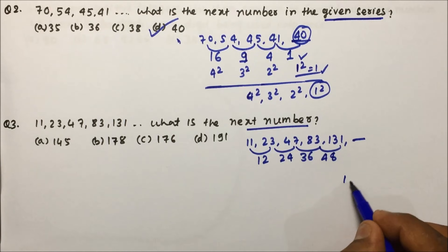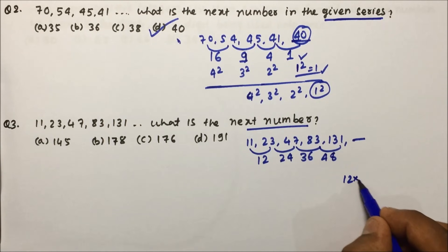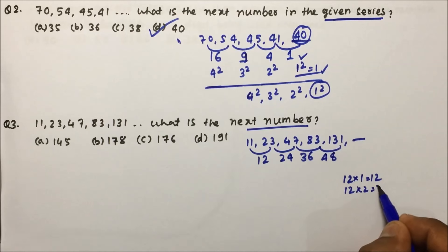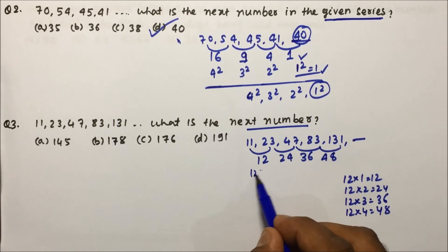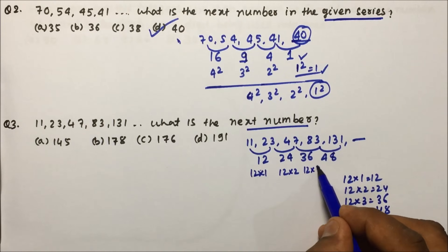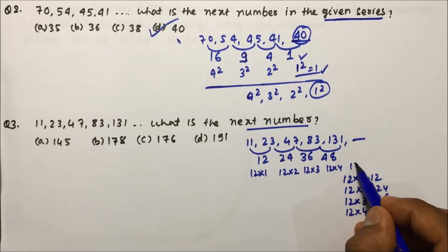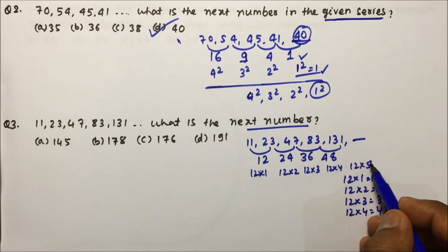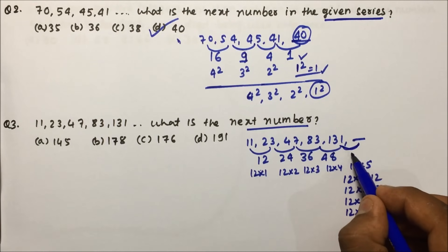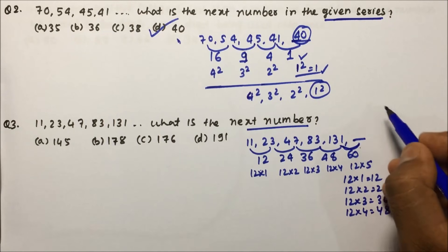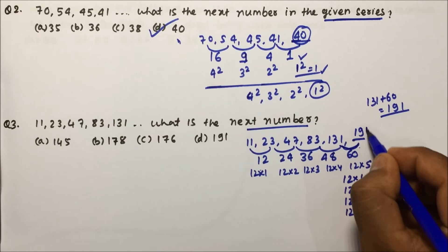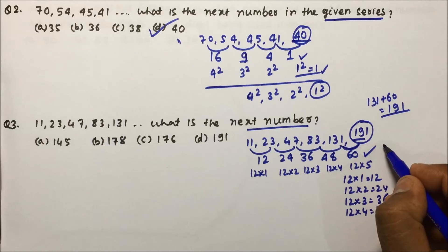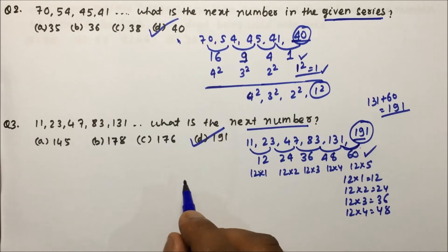The differences are multiples of 12: 12×1=12, 12×2=24, 12×3=36, 12×4=48. So the next difference will be 12×5=60. Therefore 131 + 60 = 191. Option D is the correct answer for this question.